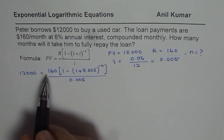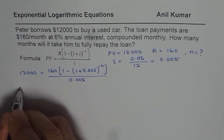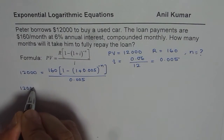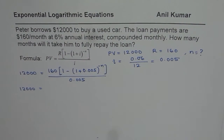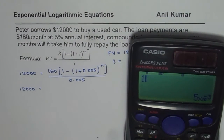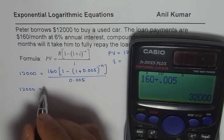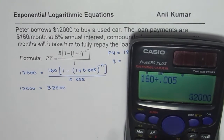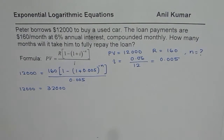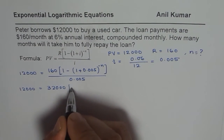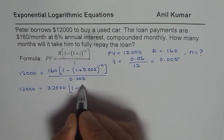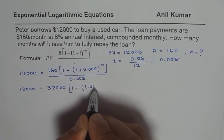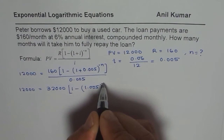Let's simplify it a bit. We can write this as 12,000 equals — dividing 160 by 0.005 gives us 32,000. So we get 32,000 times, within brackets, 1 minus 1.005 to the power of minus N.